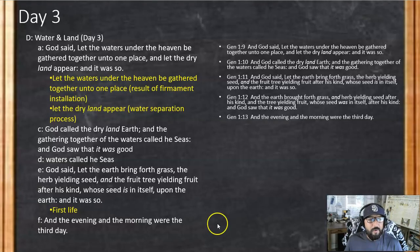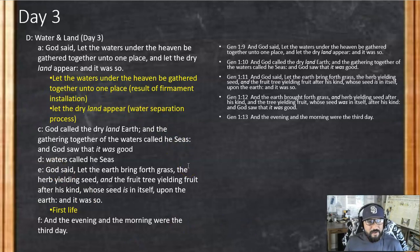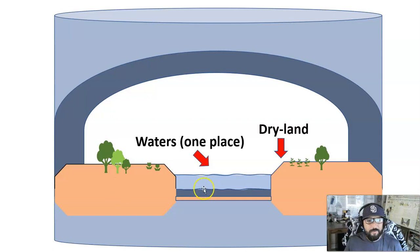Then we get day three — water and land. God said, "Let the waters under the heaven be gathered together into one place, and let the dry land appear." That's the result of the firmament installation — the water separation process. God called the dry land Earth, and the gathering together of the waters he called the Seas, and God saw that it was good. God said, "Let the earth bring forth grass, earth yielding seed, and the fruit tree yielding fruit after its kind, whose seed is in itself upon the earth." And it was so — we get the first life. So when we add these things together, we have the firmament, the 3D structure, and land — pretty consistent with what our world looks like just with our own eyes.